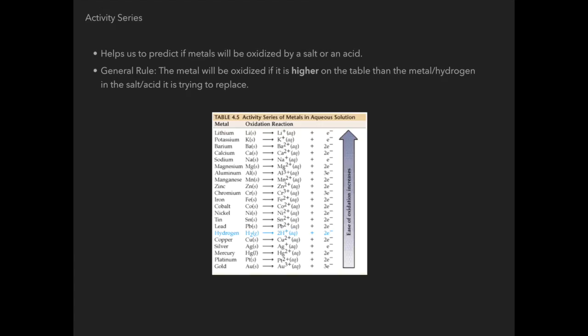Really quickly we use the activity series because it helps us predict if a metal is actually going to be oxidized by a salt or an acid. And so in general a metal will be oxidized if it is higher on the table than the metal or hydrogen in the salt or acid it's trying to replace.